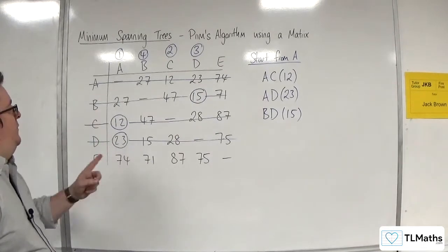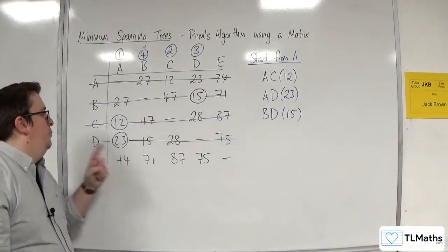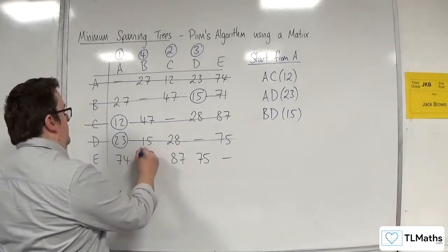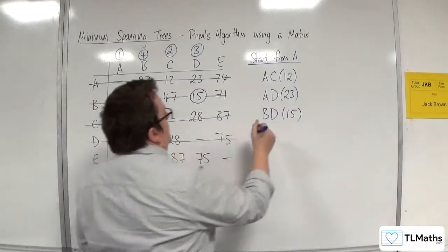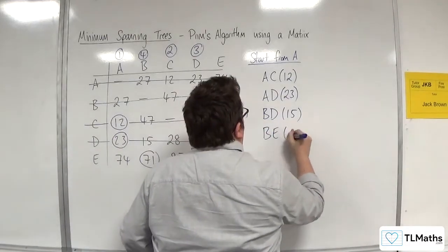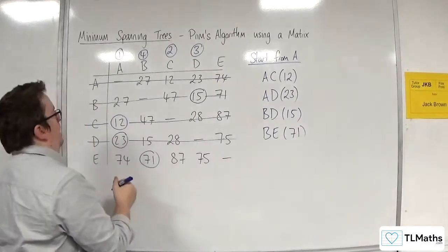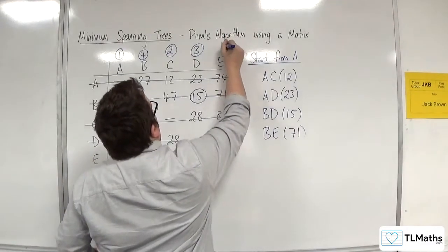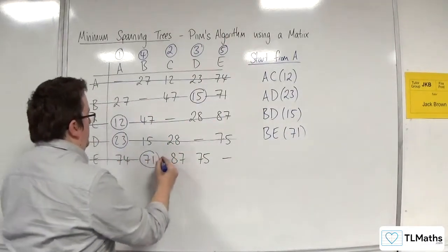I'm now looking down A, B, C and D and the next shortest would be 71. So B, E, 71. Put number 5 at the top of E, delete the rest of the row.